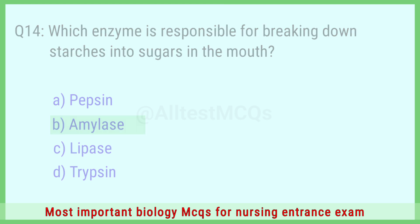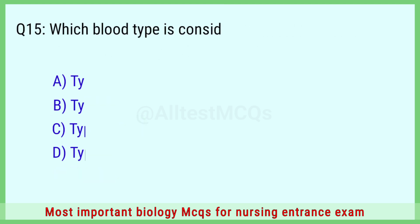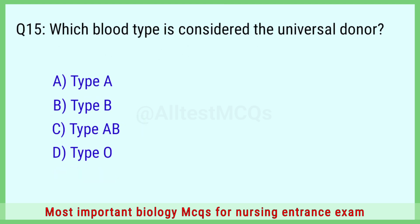Question number 15: Which blood type is considered the universal donor? The right answer is option D: type O.